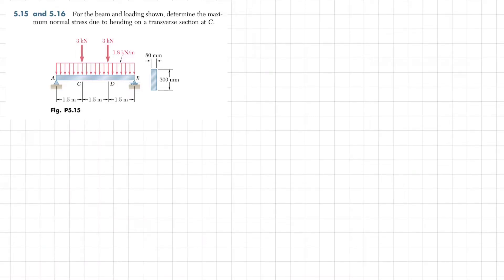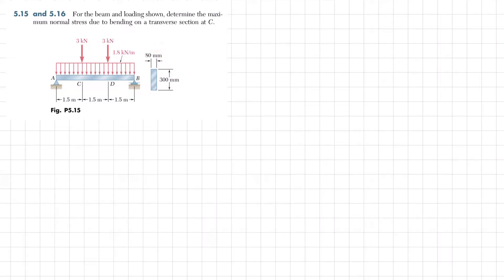Welcome back. We will solve problem 5.15. The statement is: for the beam and loading shown, determine the maximum normal stress due to bending on a transverse section at C. The cross section of the beam has a height of 300 mm and width of 80 mm. The beam AB has a uniformly distributed load of 1.8 kN/m and two concentrated loads at points D and C of 3 kN each.